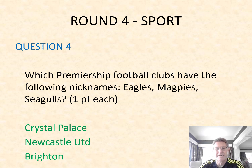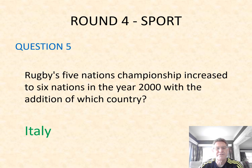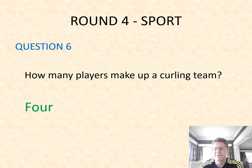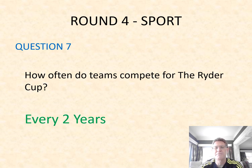So well done if you got all three of them. Question five: Rugby's Five Nations Championship increased to Six Nations in the year 2000 with the addition of which country? That was Italy — they became the sixth country. Number six: how many players make up a curling team? Four players make up a curling team. Seven: how often do teams compete for the Ryder Cup? They compete every two years.